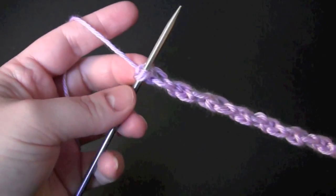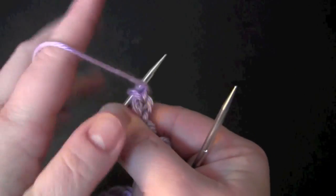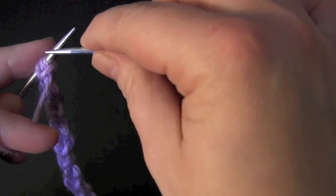Then when your chain is as long as you need it to be, you can finish it off by just purling your two stitches together.